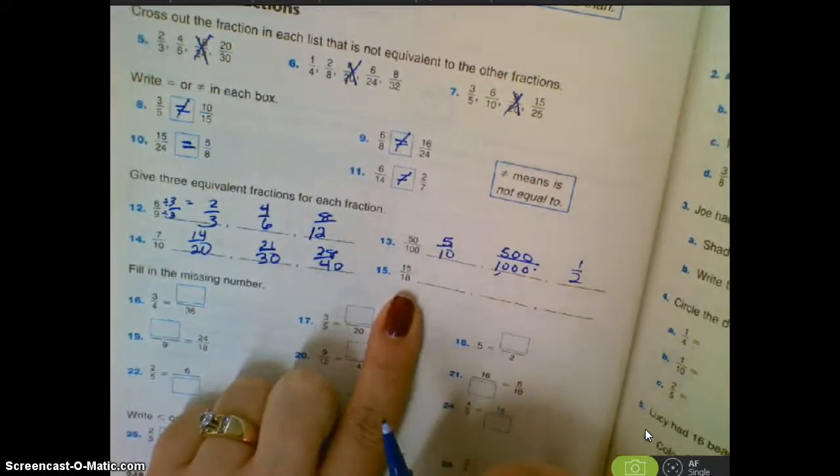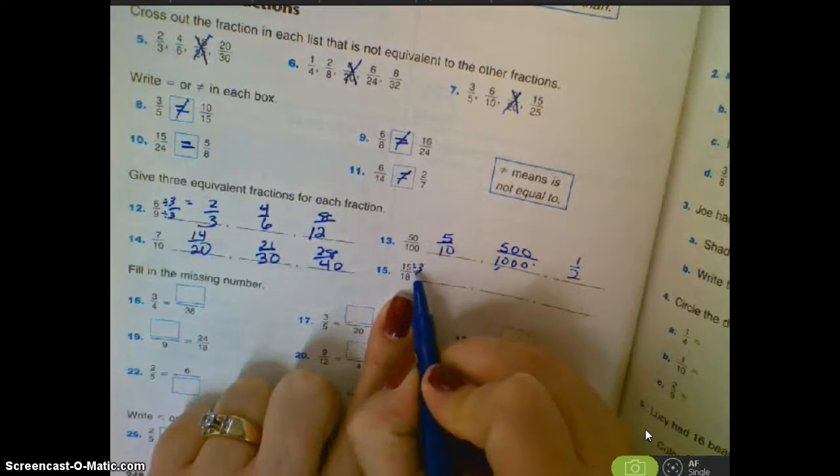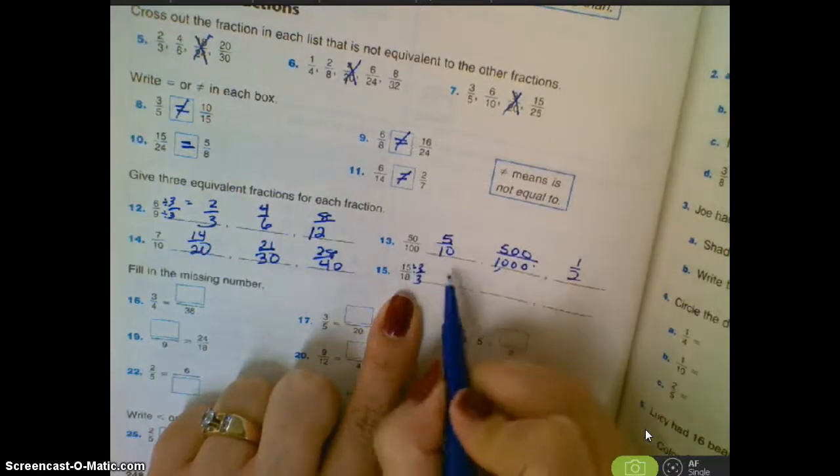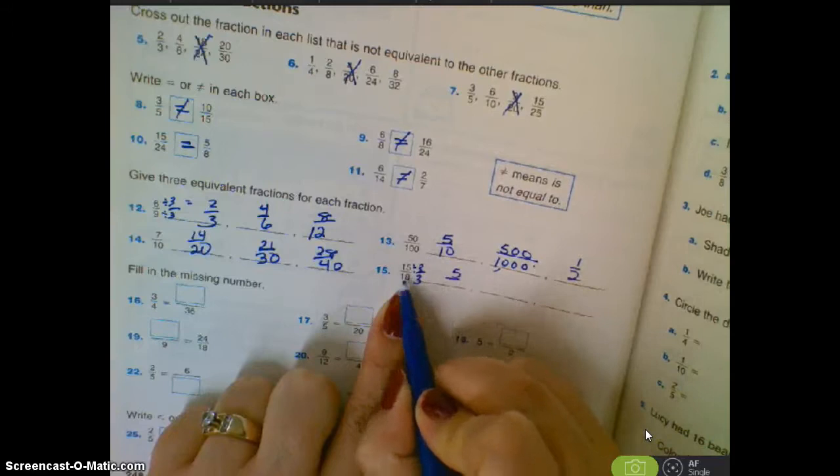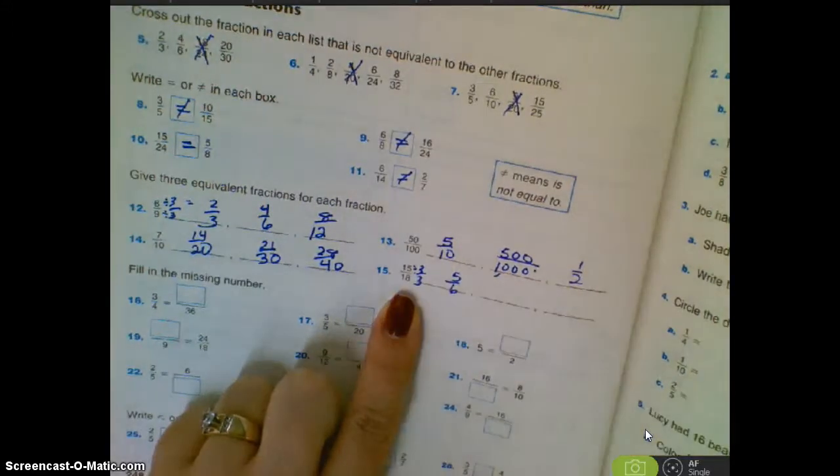Fifteen-eighteenths. I think I'm going to divide that one. And I'm seeing a three in there as a factor. So I could divide them both by three over three. And if I did, I would get five up here. And I would get eighteen divided by three is six. So I'd get five-sixths for that.